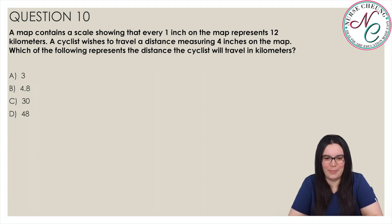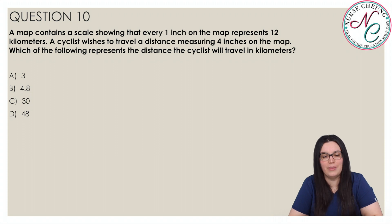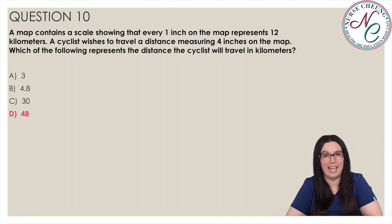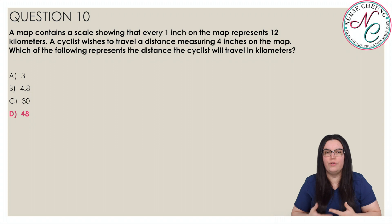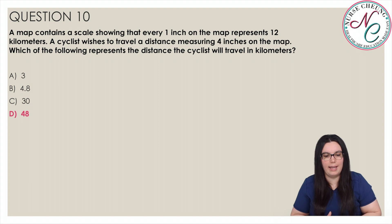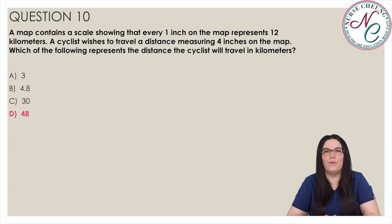Final question. A map contains a scale showing that every one inch on the map represents 10 kilometers. A cyclist wishes to travel a distance measuring 4 inches on the map. Which of the following represents the distance the cyclist will travel in kilometers? Is it A, 3; B, 4.8; C, 30; or D, 48? The correct answer is D, 48. We set up: 1 over 10 equals 4 over K. Cross multiplying gives 1K equal to 10 times 4, which is 48 kilometers.